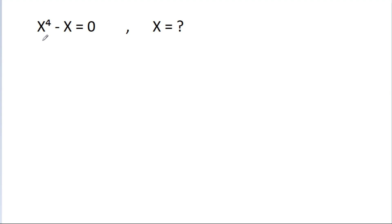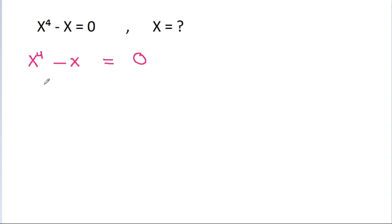In this video, we have given that x to the power 4 minus x is equal to 0, and we have to find the value of x. We have x⁴ minus x is equal to 0, and we can take x common to get x(x³ minus 1) is equal to 0.